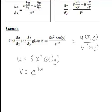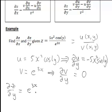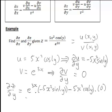Now let's find the partial derivative of z with respect to y. We need ∂u/∂y: cos(y) differentiates to negative sine(y), so ∂u/∂y equals negative 5x squared·sine(y). For v equals e to the 3x, since there are no y's, ∂v/∂y equals zero. Applying the quotient rule, we get v times ∂u/∂y minus u times ∂v/∂y, divided by v squared — that is e to the 3x times negative 5x squared·sine(y) minus 5x squared·cos(y) times zero, divided by e to the 3x squared.